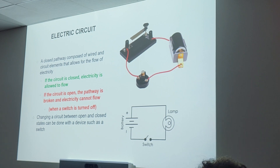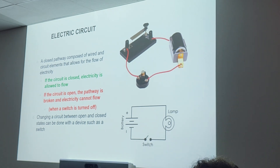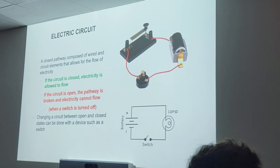Right now the lights in here are turned off. We're talking about the switch and the circuit. The switch is turned off, so our circuit is open. The light is broken — or open. You're not going to have 'broken' on the test, so use 'open.' Changing a circuit between open and closed can be done with a switch.